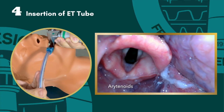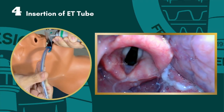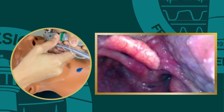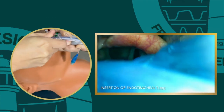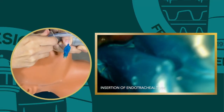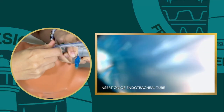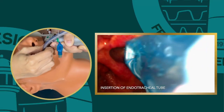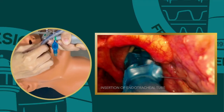With the right hand, insert the endotracheal tube from the right side of the mouth, passing it directly between the vocal cords until the cuff and the double black line passes through the cords.